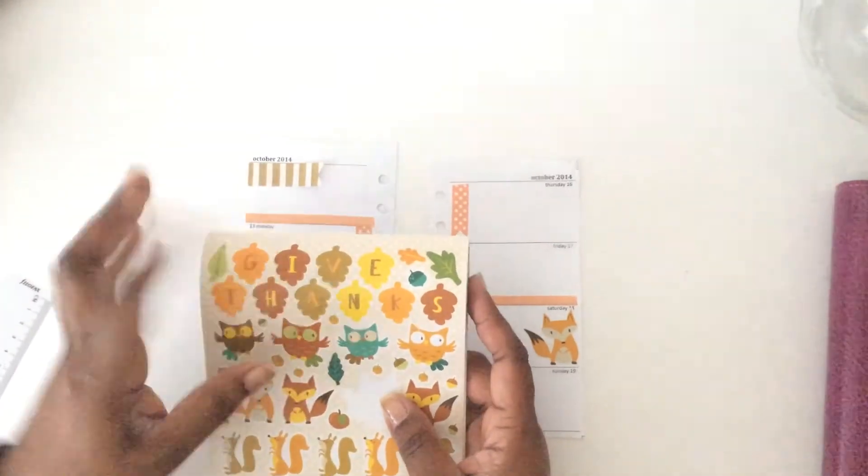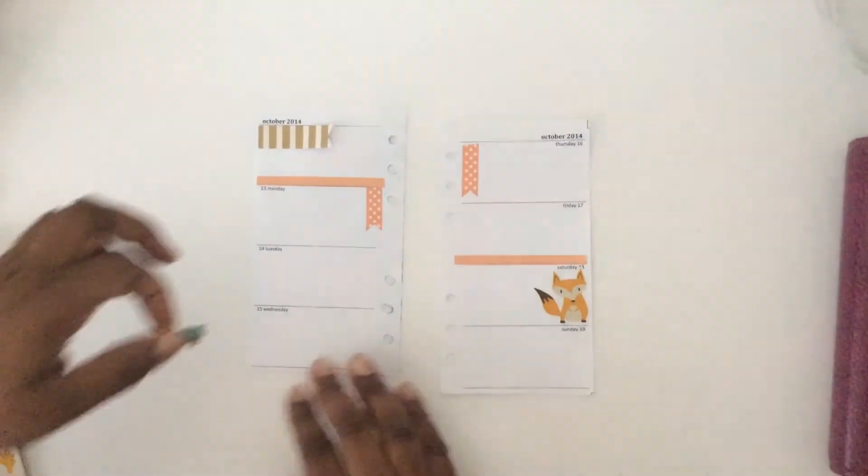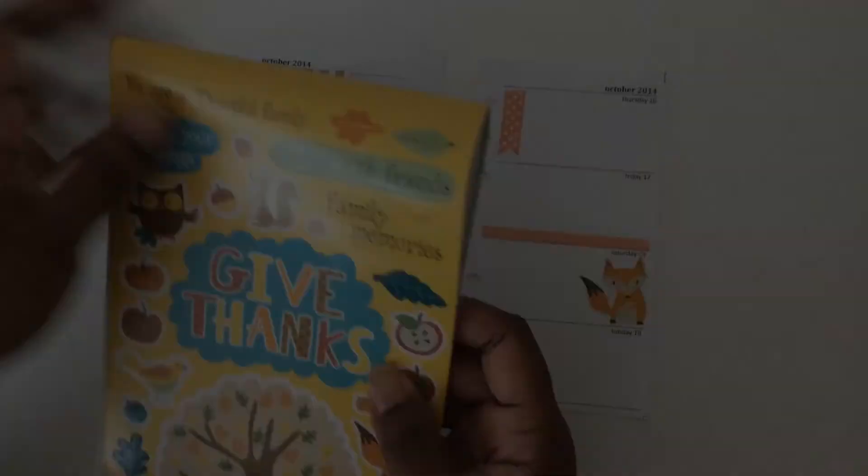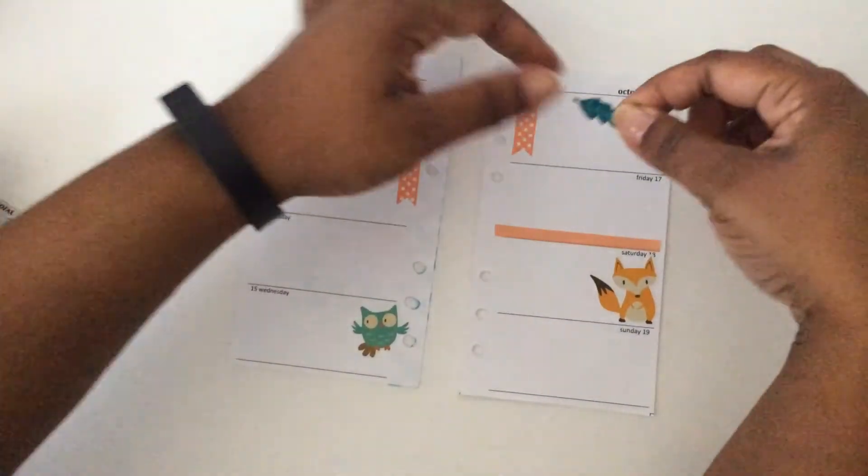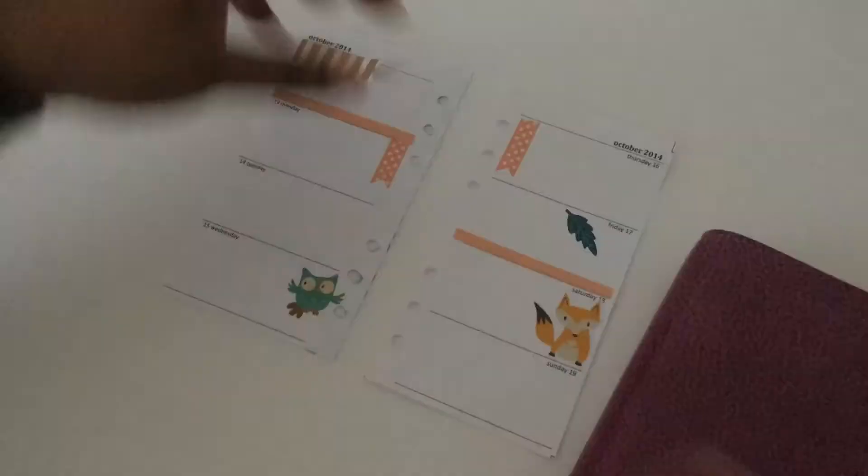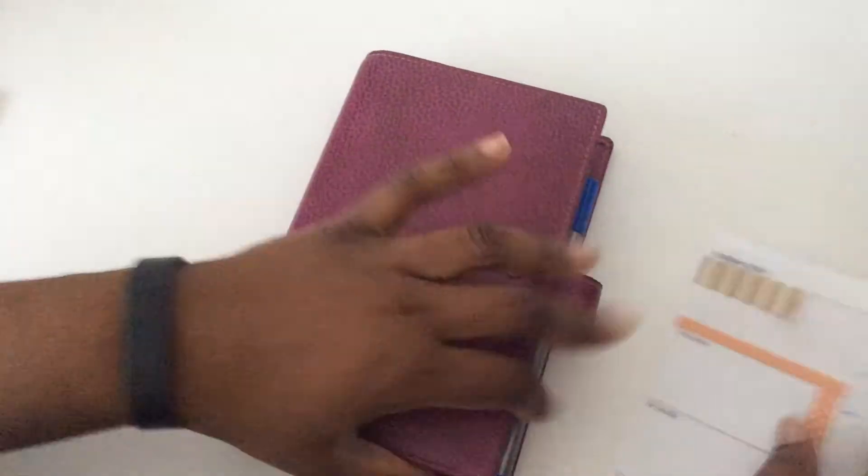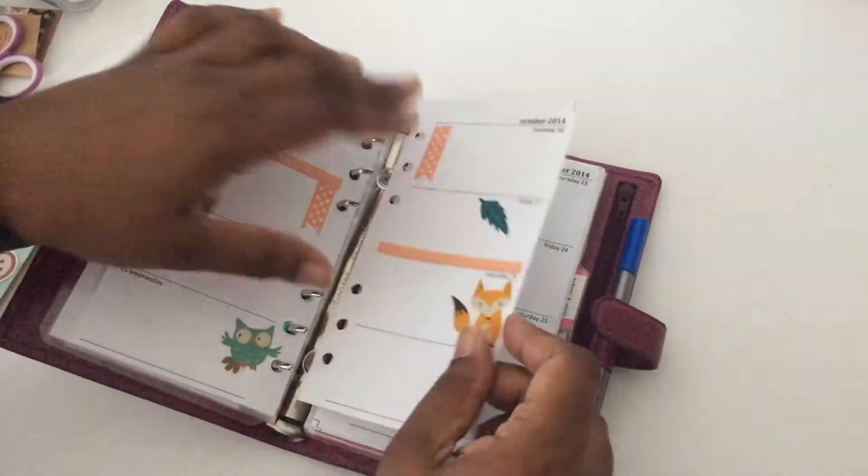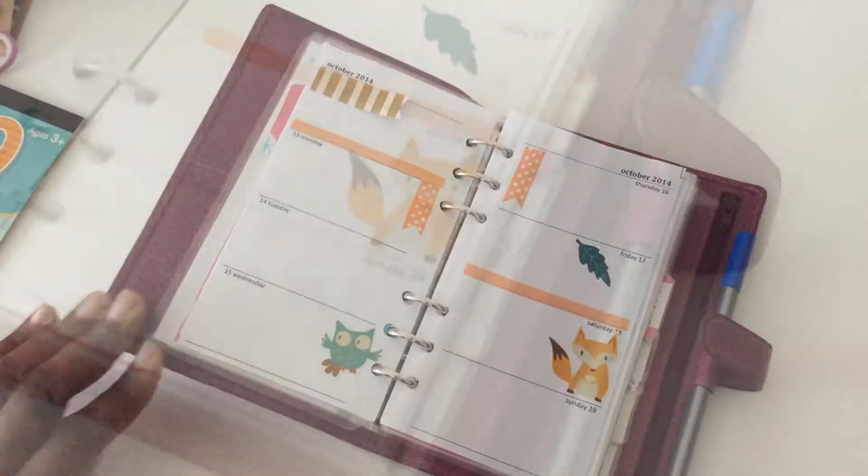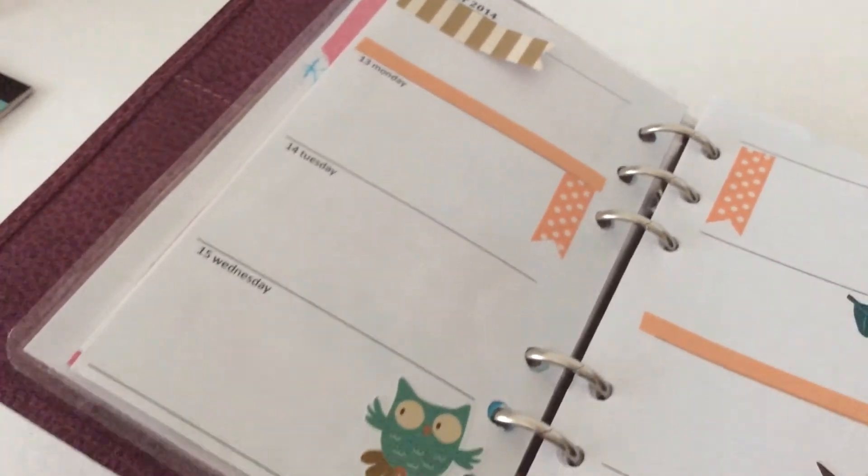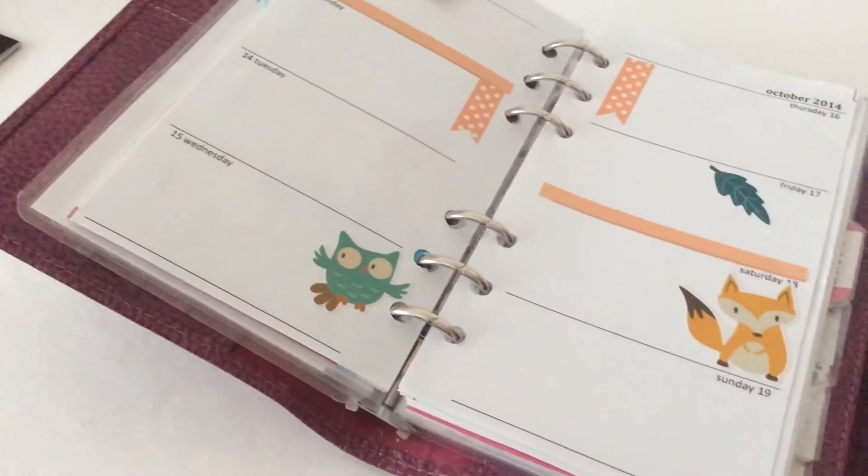Now I'm just going to add a little bit more to brighten up the page. So I'm looking for some friends for the fox. So much easier to take the pages out and decorate, and then when I'm done just insert them back into the binder. And that's about it, and we're done.